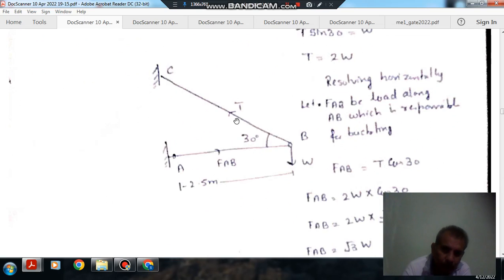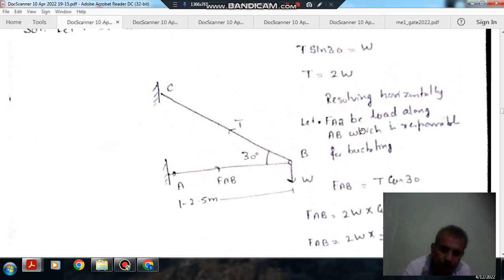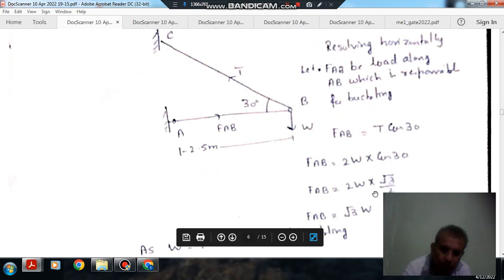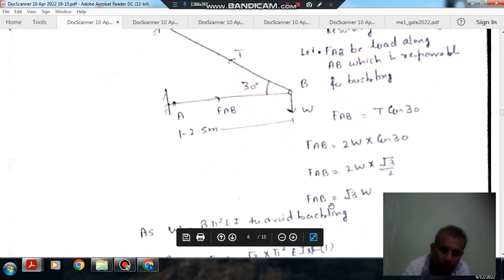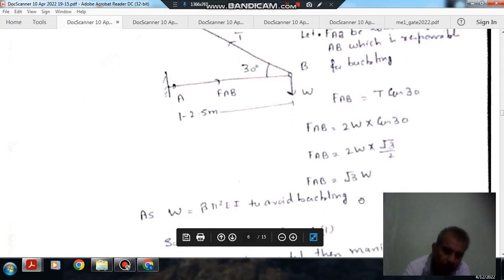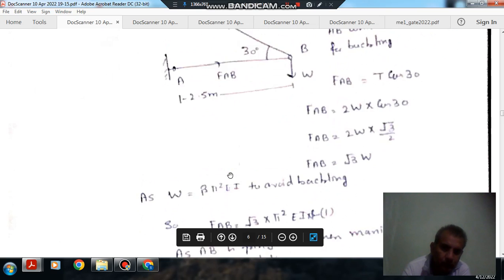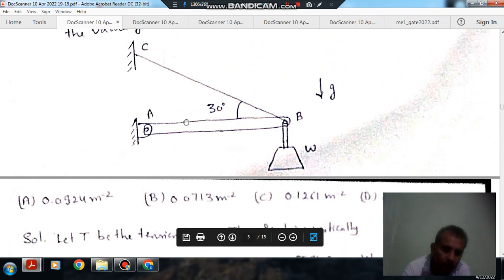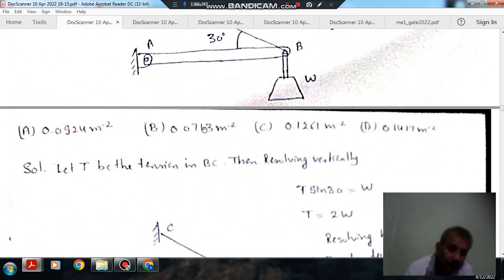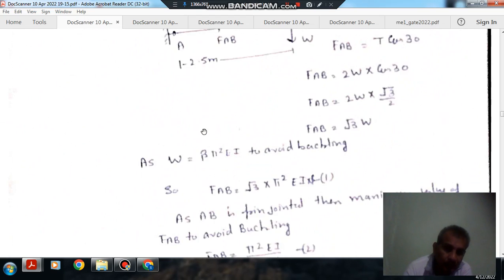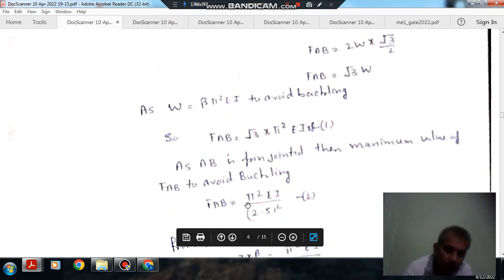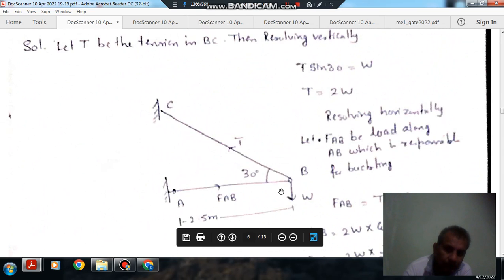Now if we resolve, then FAB will be 2W times root 3 by 2, or FAB is root 3W. Now this is your pin jointed end, and to avoid buckling in pin jointed end, the load should be FAB should be pi square EI by L square, and L is 2.5.